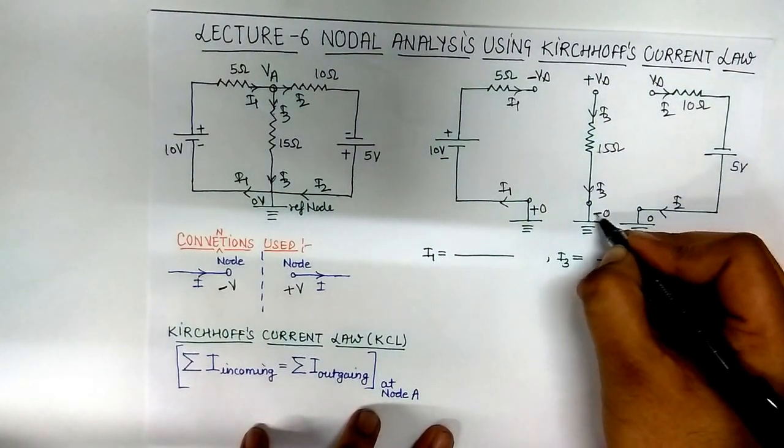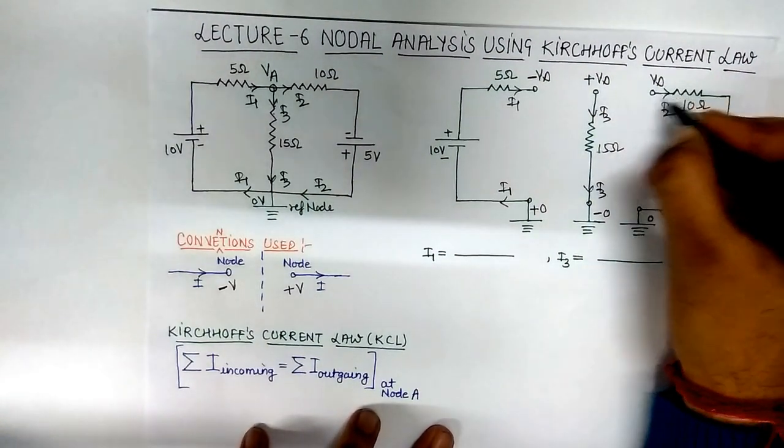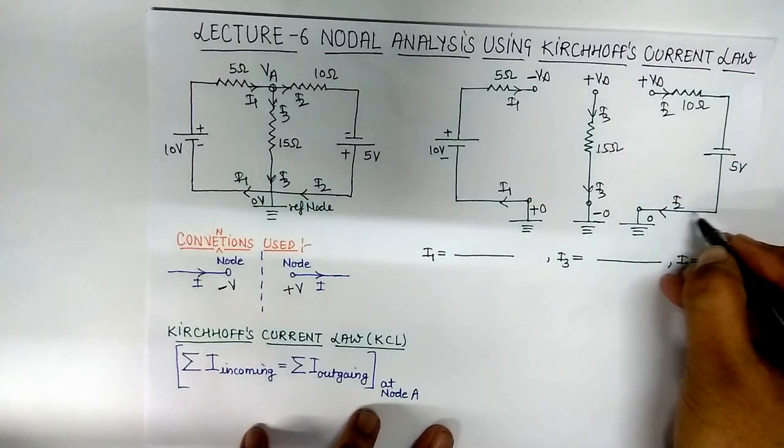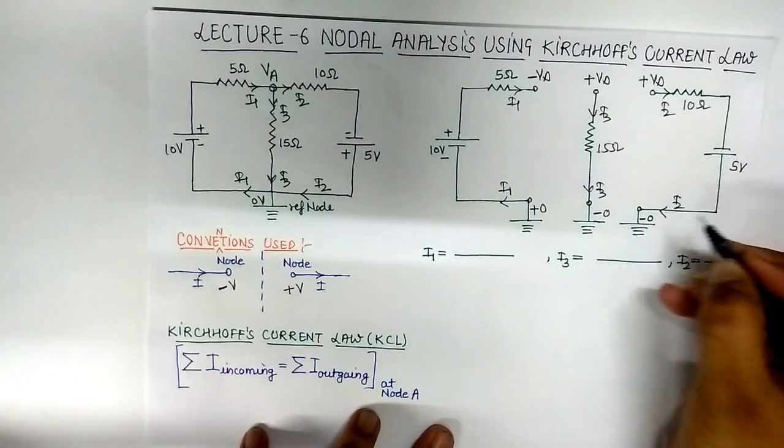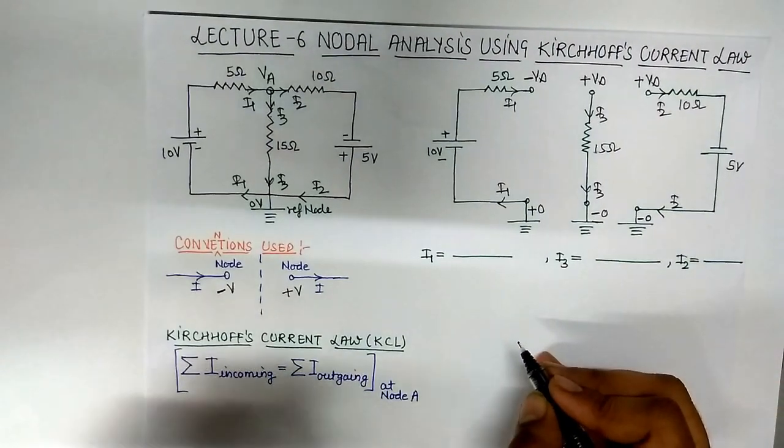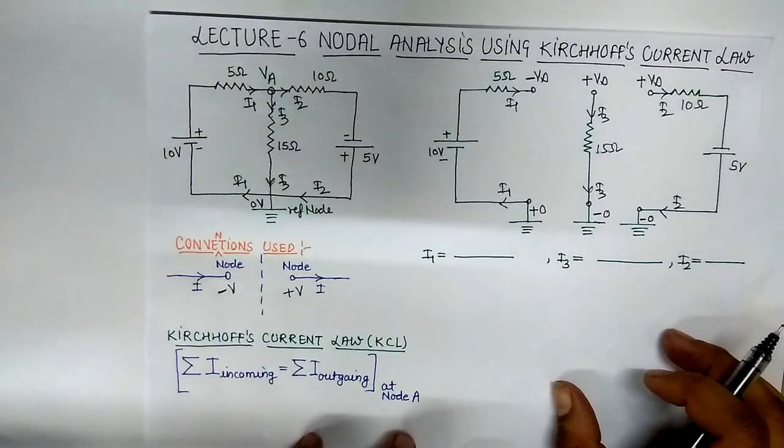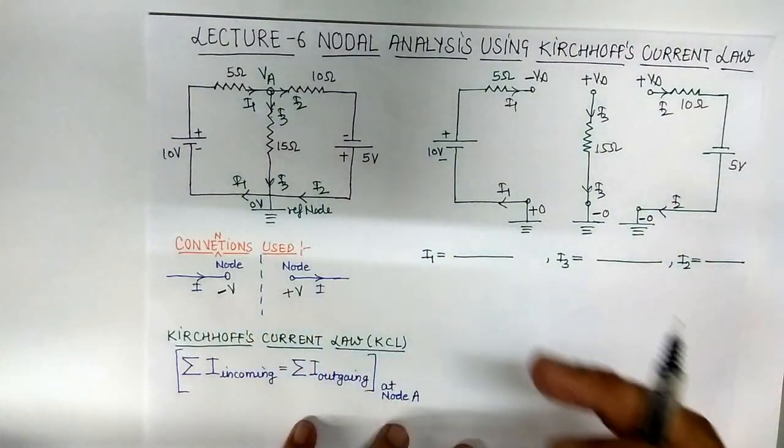Current is incoming, minus 0. Current is outgoing from this particular node, so this is plus VA, and current is incoming at this node, that's why it is minus 0. So we denoted every potential according to this convention, minus and plus.